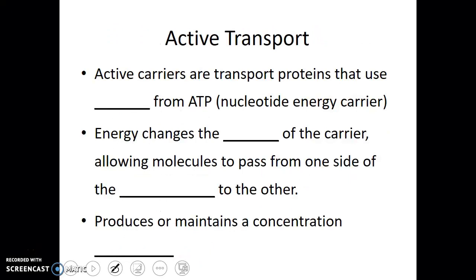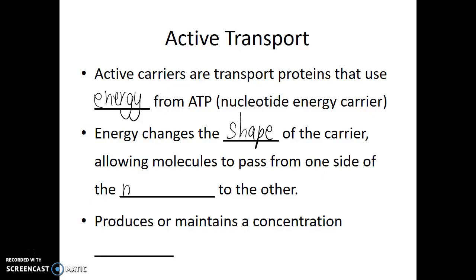Active transport is when molecules are pumped against the concentration gradient. Active carriers are transport proteins that use energy from ATP, which is a nucleotide, a nucleic acid monomer. The way these active carriers work is that energy changes the shape of the carrier, allowing molecules to pass from one side of the membrane to the other. You can think of this as an electrical pump actively pumping molecules against the force of diffusion. Active transport produces or maintains a concentration gradient.